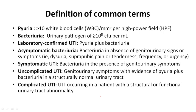Let's see some of the common defining terms related to urinary tract infections. Pyuria is defined as more than 10 WBCs per cubic mm per high-power field. Bacteriuria is defined as a urinary pathogen of more than 10 raised to the power 5 colony forming units per ml. Laboratory confirmed UTI is defined as pyuria plus bacteriuria.